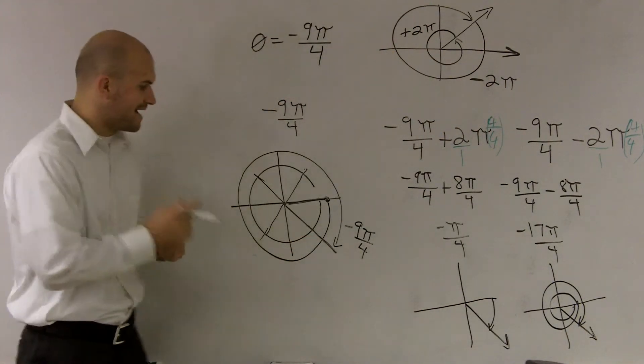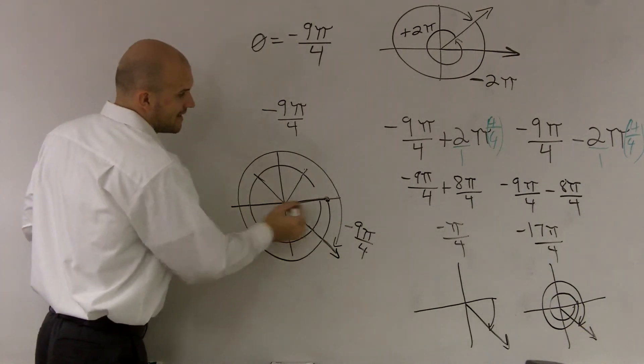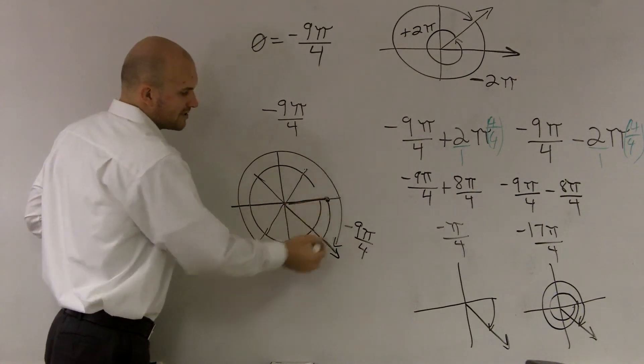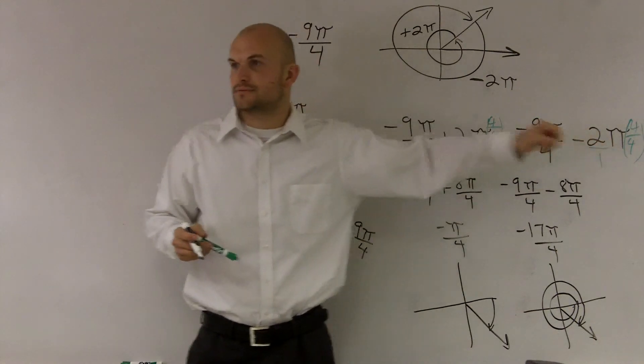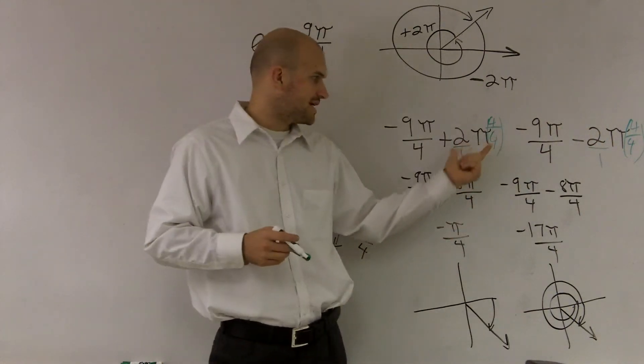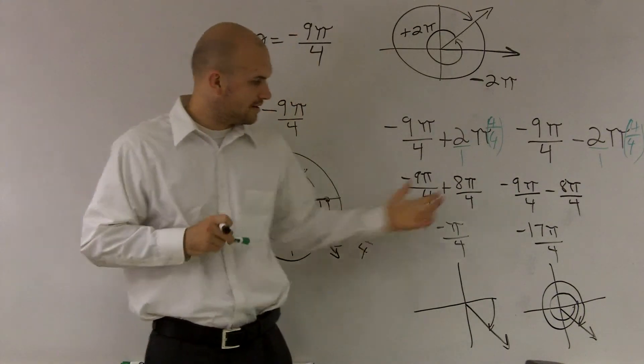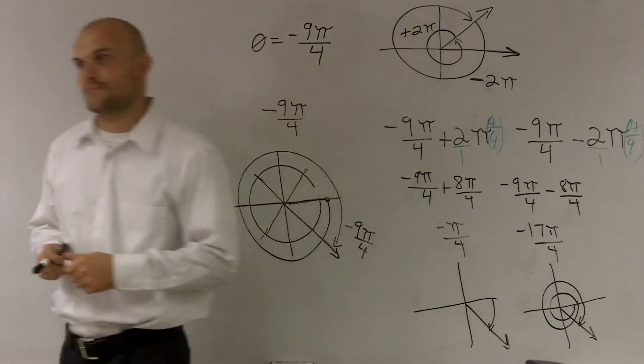So again, guys, to find co-terminal sides, they have to have the same end point and the same initial side. Obviously we're going to still use the same initial side. But to figure them out, add 2π and subtract 2π. And just make sure you guys remember how to add or subtract fractions because that will be what you guys will forget. And then what you'll see is my two angles both have the same terminal side.